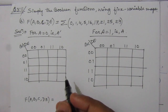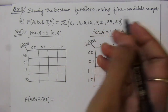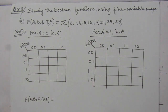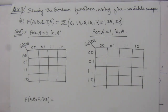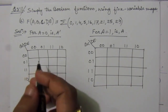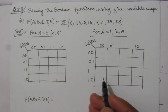The problem is to simplify the boolean functions using 5-variable maps. We are given 5-variable sum of minterms functions, and we have to simplify those boolean functions using 5-variable maps. For 5-variable maps, we have to make 2 maps of 4-by-4, or 4-variable maps.